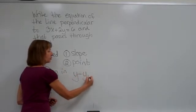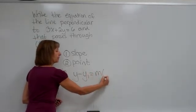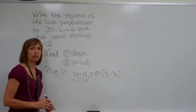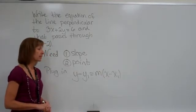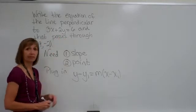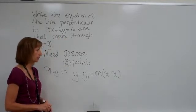y minus y sub 1 equals m times the quantity x minus x sub 1. This isn't the only way that you can write equations of lines, but it is a way that you can get the equation of a line with a given set of characteristics.